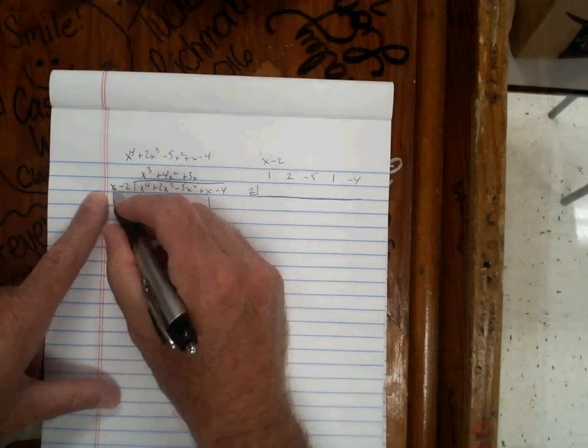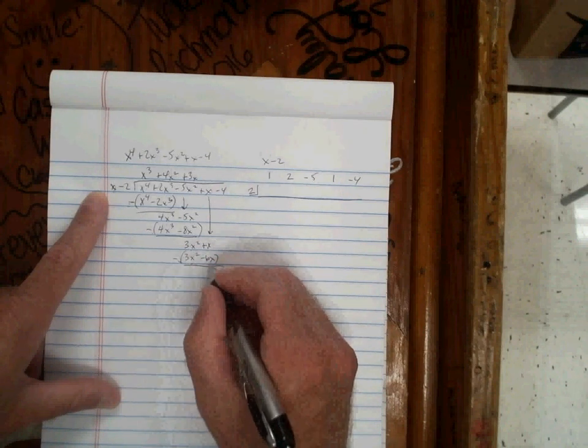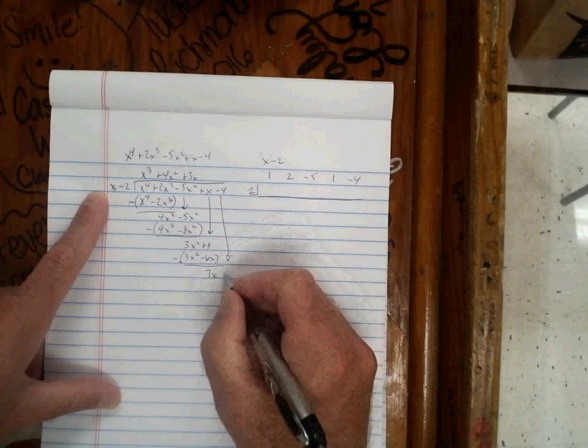3x squared minus 3x squared is gone. x minus negative 6x makes positive 7x. Bring down the negative 4.